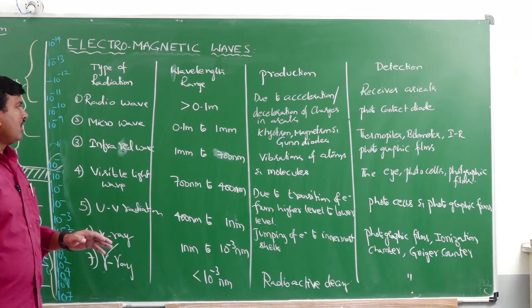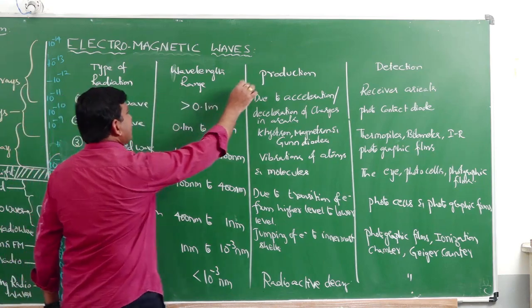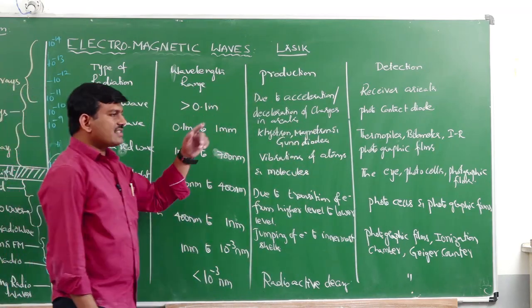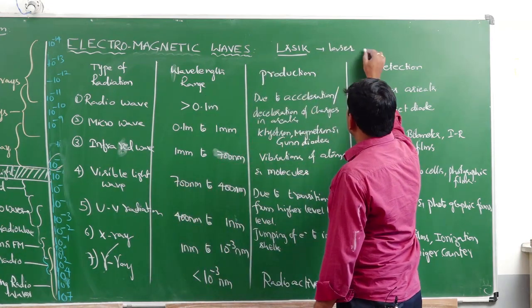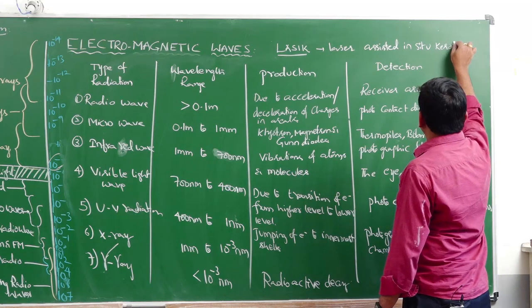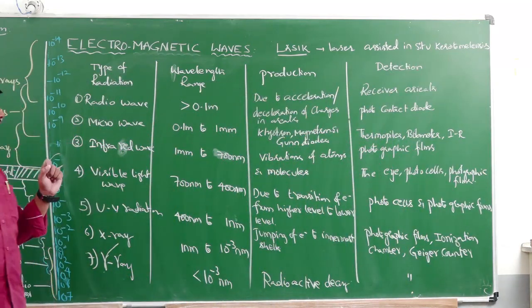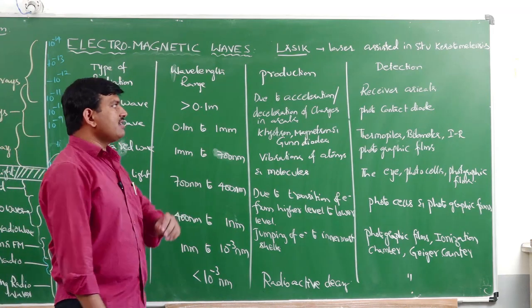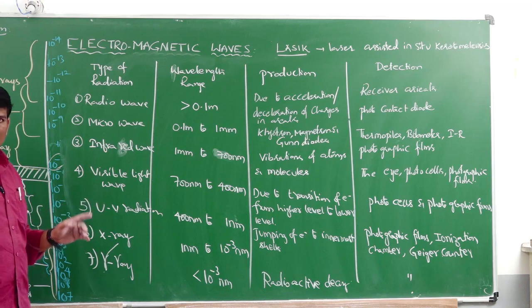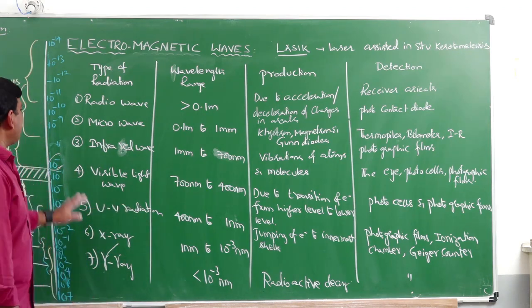This tabular column helps in quickly understanding the electromagnetic spectrum. One additional term to note is LASIK — Laser Assisted In Situ Keratomileusis — which is a therapy used for eye surgery involving UV or excimer laser radiation. This concludes the topic of the electromagnetic spectrum.